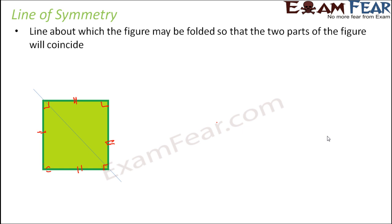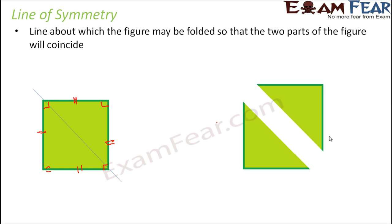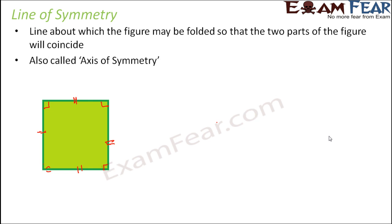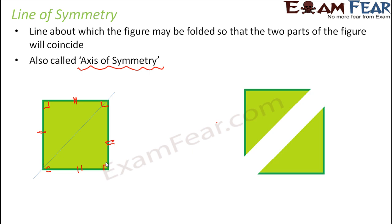Consider yet another line — slightly different from the previous two. It again divides the square into two equal identical halves which are mirror images of each other. When you fold one and place it over the other, they both exactly coincide. There exists one more line of symmetry — the diagonal — which again divides the square into two equal halves that are mirror images of each other.